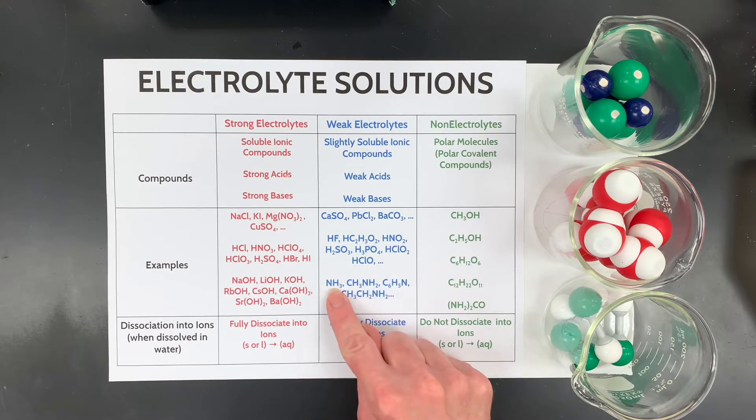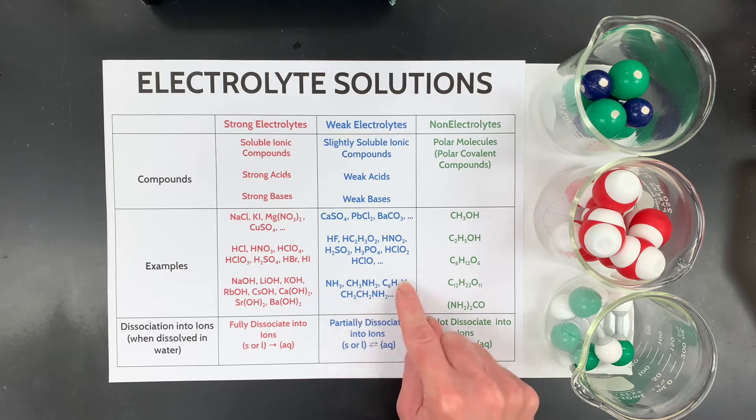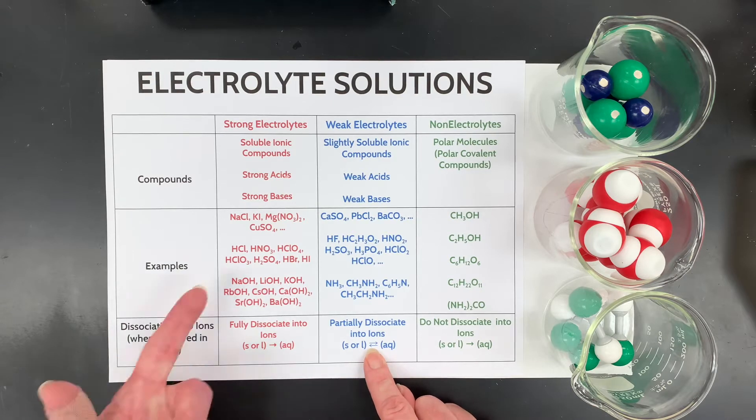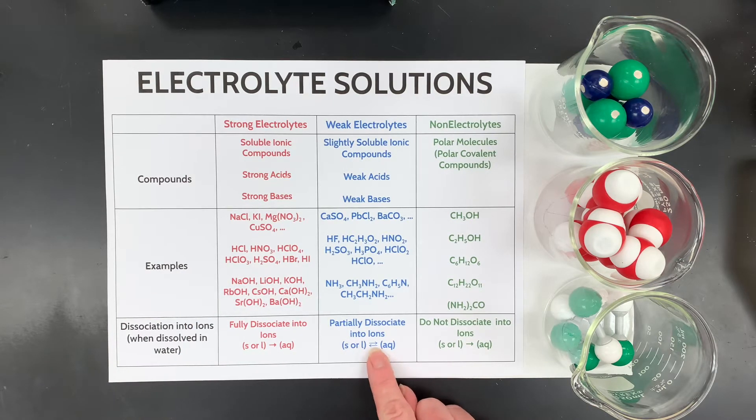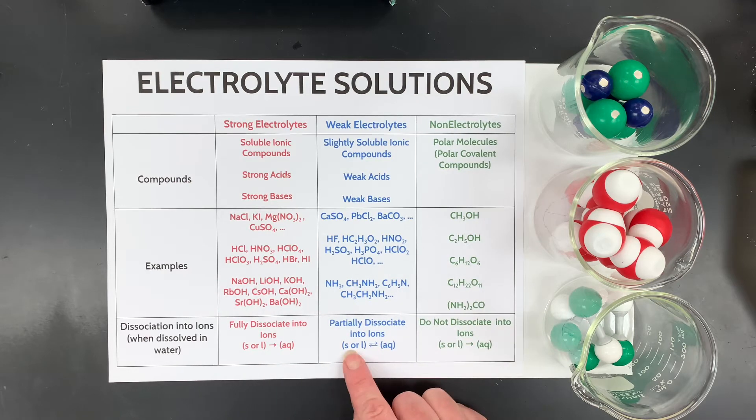All right, then for weak bases, they all have a nitrogen and some common ones are ammonia. And then this is methylamine, pyridine, and ethylamine. They partially dissociate into ions and reach what's called equilibrium, which you might have to learn about in chemistry. So there's two arrows. And what that means is there's not all ions, there's some molecules left and some ions.